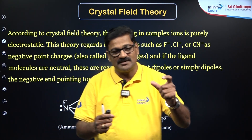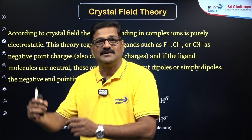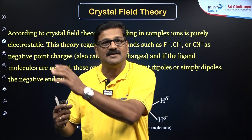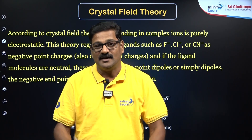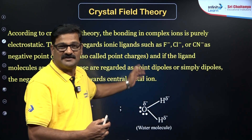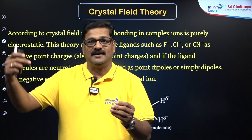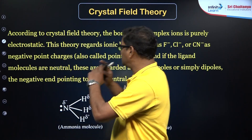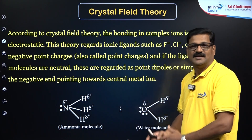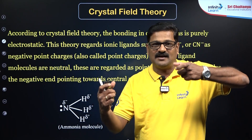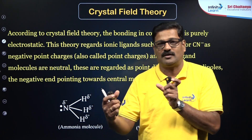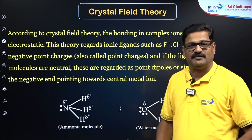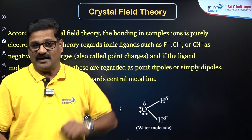In VBT, the bond between the central atom and the ligand is said to be purely covalent. Whereas, according to crystal field theory, the bond between the central atom and the ligand is purely ionic. According to CFT, the central metal atom interacts with an ionic ligand or a point dipole through an ionic interaction.